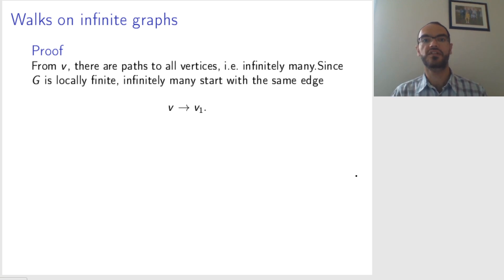Because the graph is locally finite, infinitely many of them start with the same edge. Why is that? You have infinitely many paths.